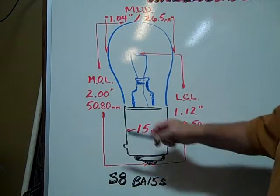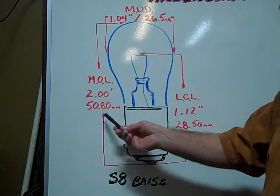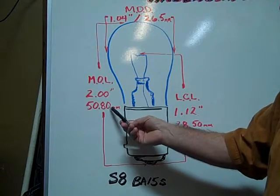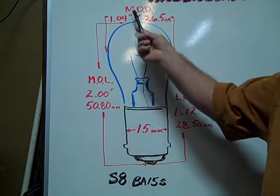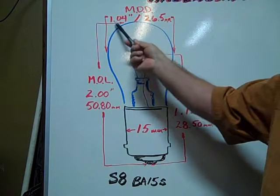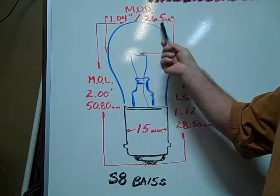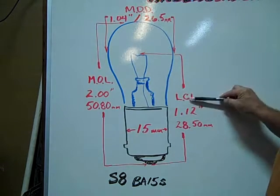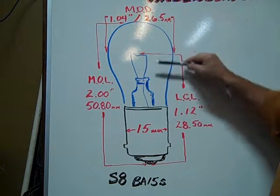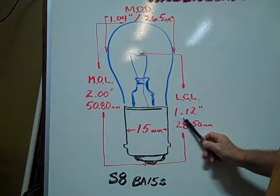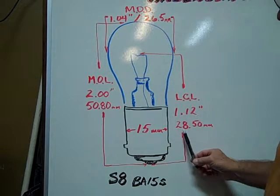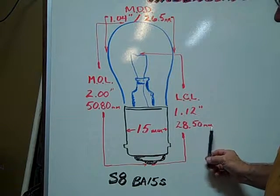Maximum overall length is 2 inches or 50.80mm. Maximum outer diameter is 1.04 inches, 26.5mm. The light center length is 1.12 inches or 28.50mm.